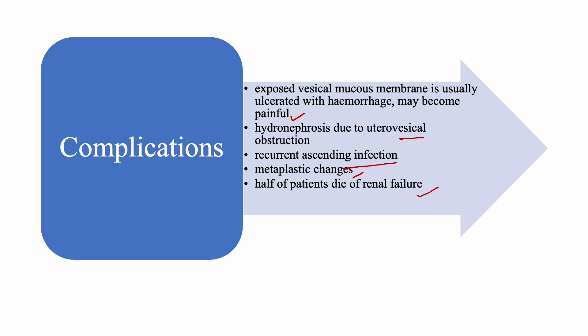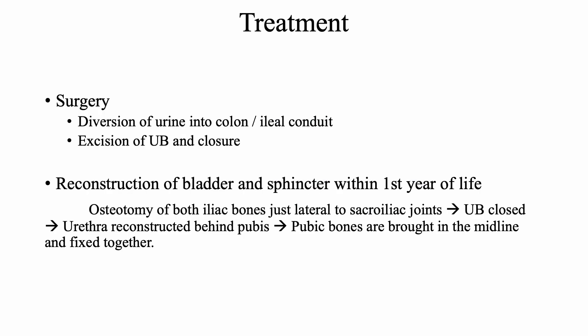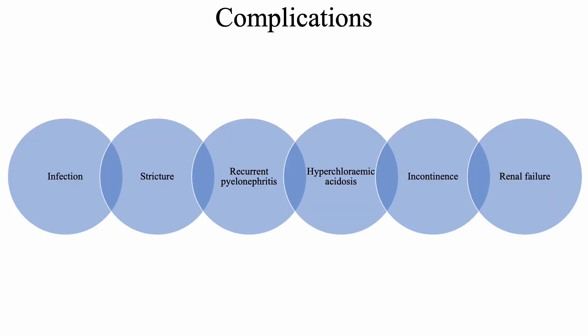Treatment is surgical. Options include diversion of urine into the colon or via an ileal conduit, and excision of the urinary bladder with closure. Reconstruction of the bladder and sphincter should be done within the first year of life. For this, an osteotomy of both iliac bones just lateral to the sacroiliac joints is performed, the urinary bladder is closed, the urethra is reconstructed behind the pubis, and the pubic bones are brought to the midline and fixed together.